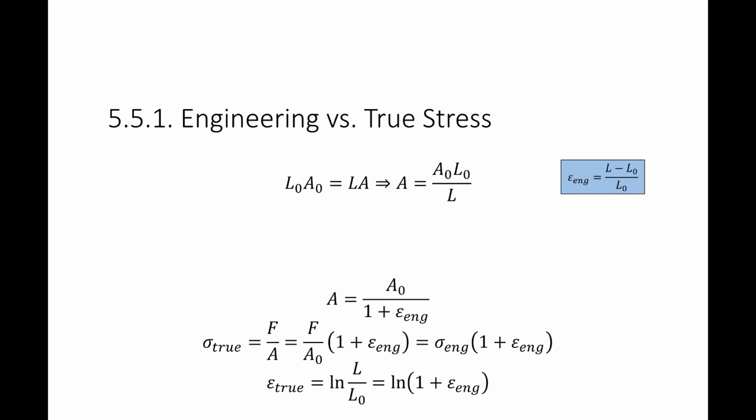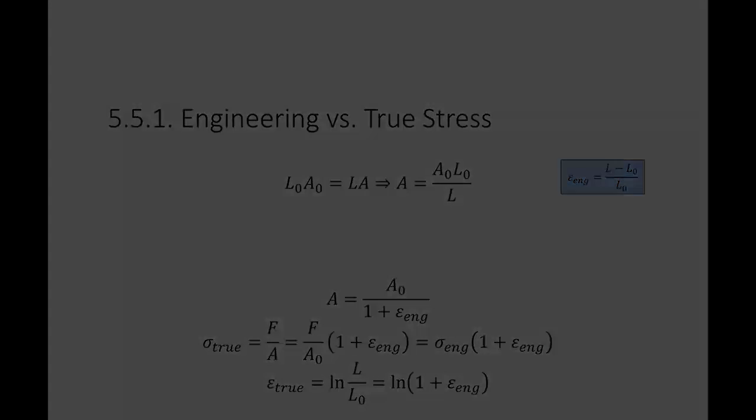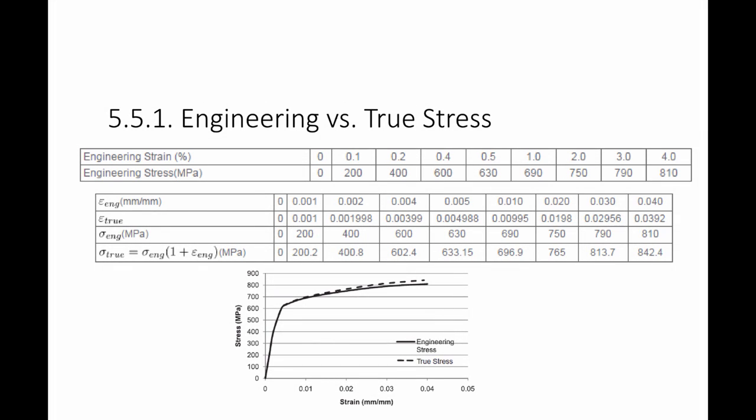So these two equations allow me to find the true stress and the true strain given the engineering stress and engineering strain. In particular, for metals, if I take a specimen to the lab and measure the engineering strain and engineering stress — force divided by the original area — I can simply convert them into true stress and true strain using these equations.